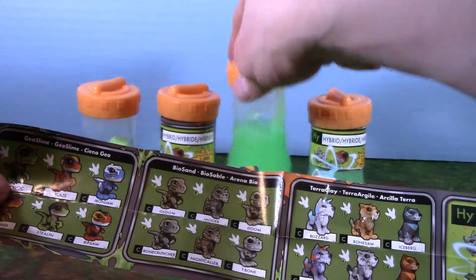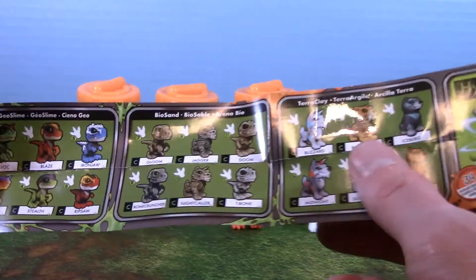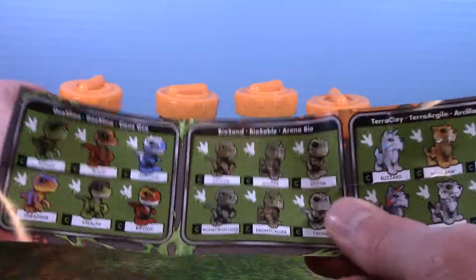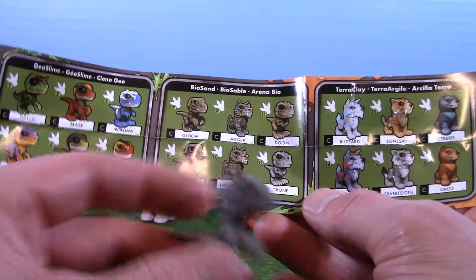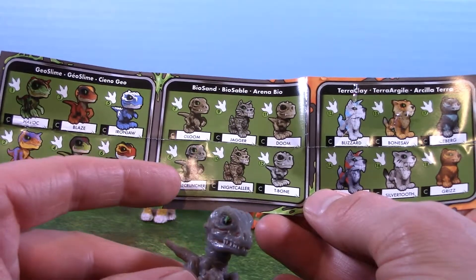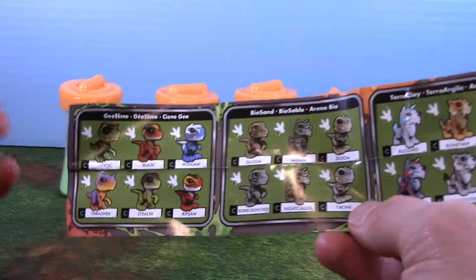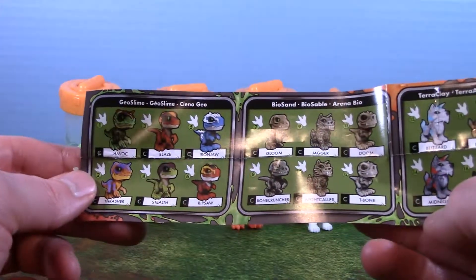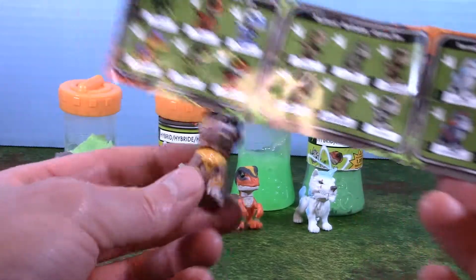That's definitely the geoslime. Wow, look at all these little critters. Who is this guy? He's gray. He was in biosand. He's got green eyes. Looks like bonecruncher. T-bone or bonecruncher. I think he's bonecruncher. Now this guy is kind of easy to tell. He was in terraclay. So look at the terraclay section. And his name is Grizz. He looks to be the only brown bear that's on this section. Yeah, he's really cool.